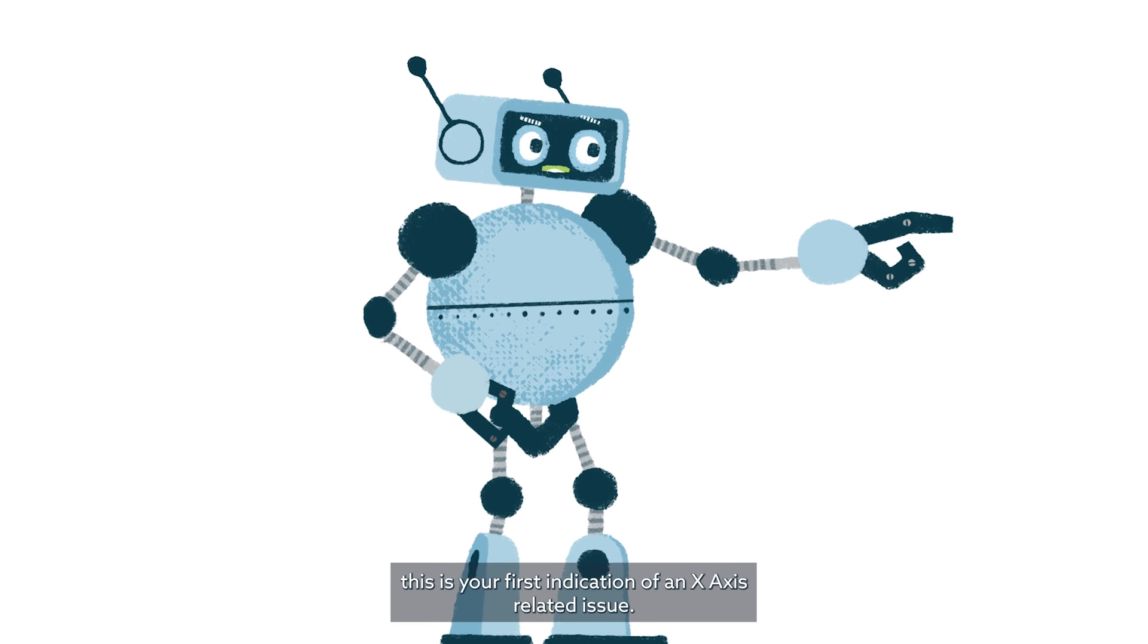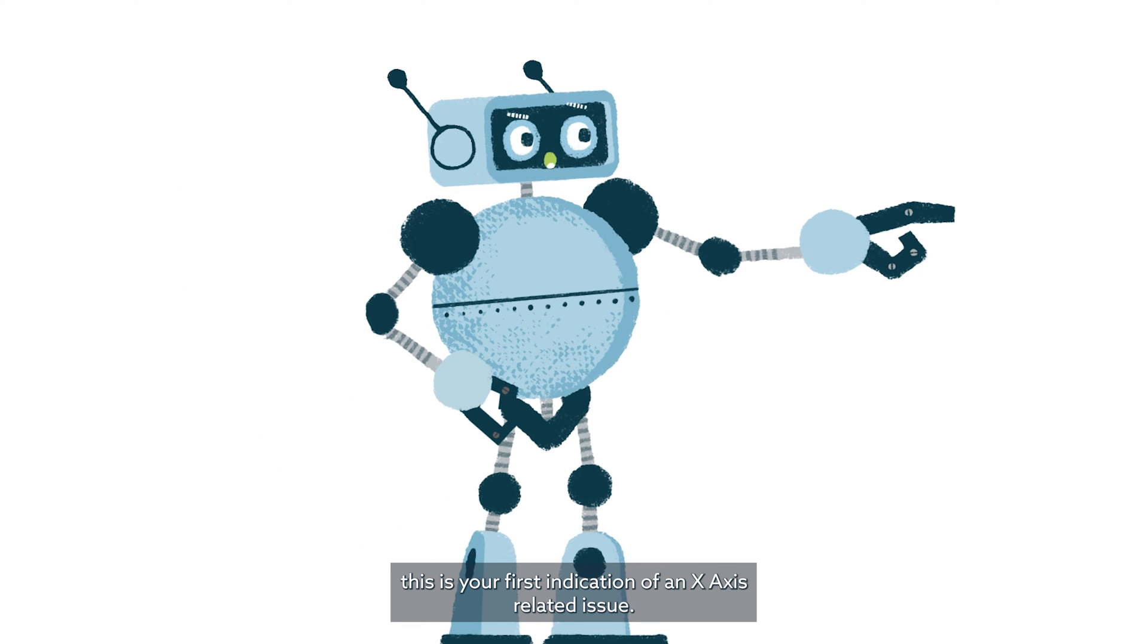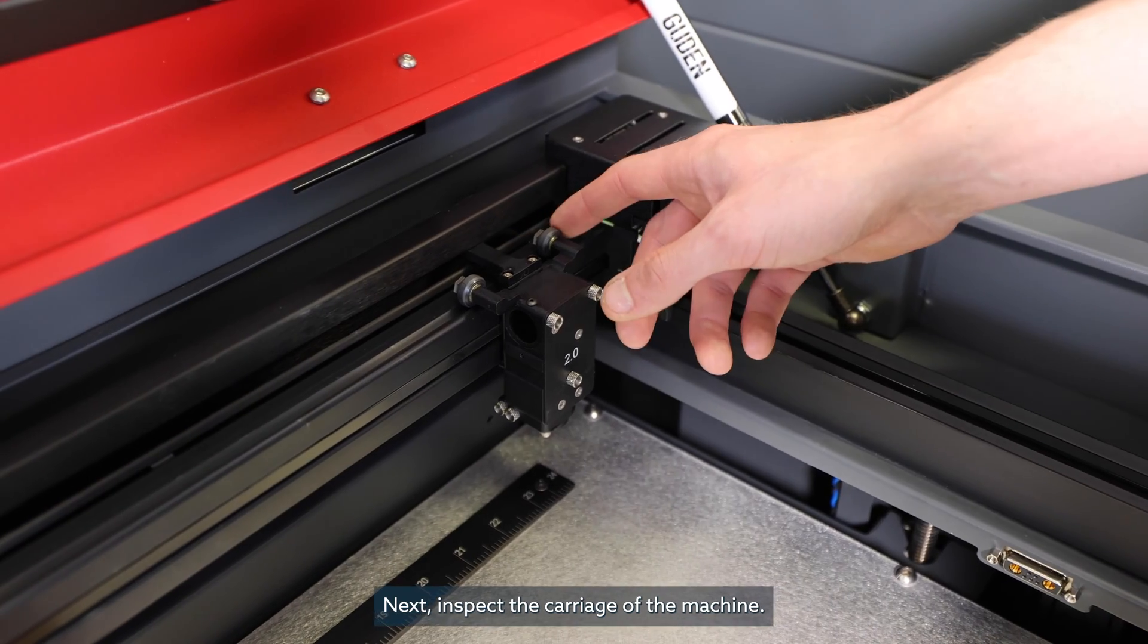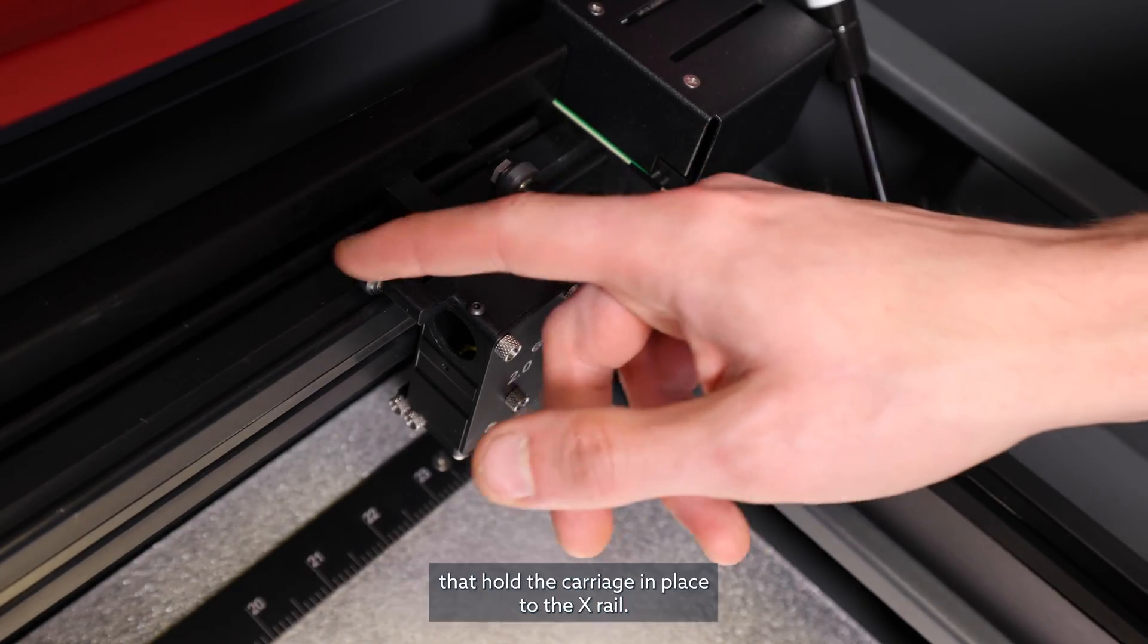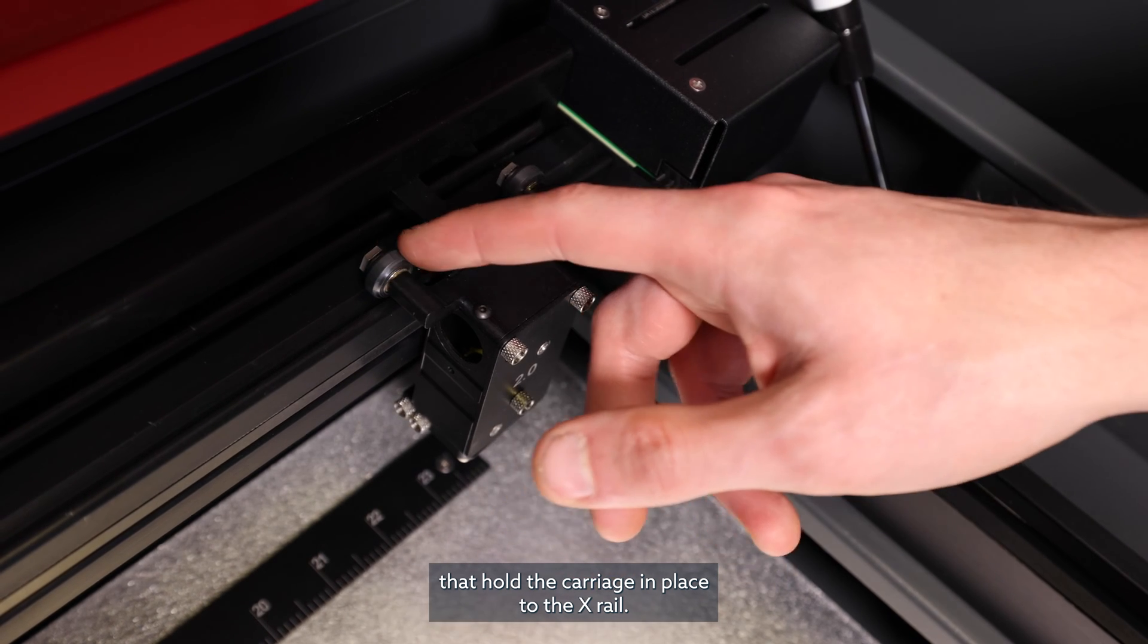Next, inspect the carriage of the machine. You will notice three or four wheel bearings on your machine that hold the carriage in place to the x-rail. Do these wheels have any noticeable scuffing or shedding on them?